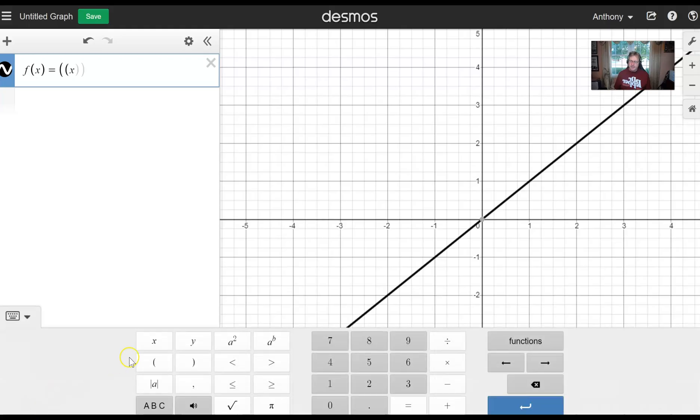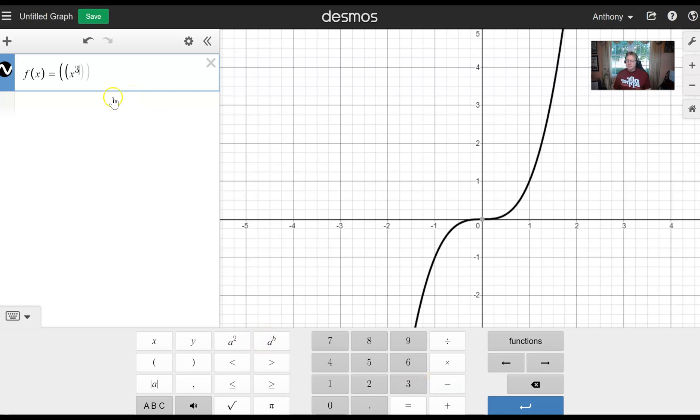We have x cubed, which is found by taking the a to the b power and hitting the three. Notice we're in that cubic exponent there, so we're going to have to click our right arrow either on the keypad interface or on your device. What I like about Desmos is it graphs on the fly. Hey, there's the graph of y equals x cubed. Thing is, we're not going to be there for long.